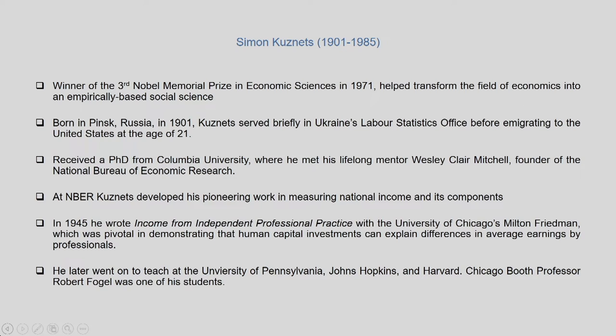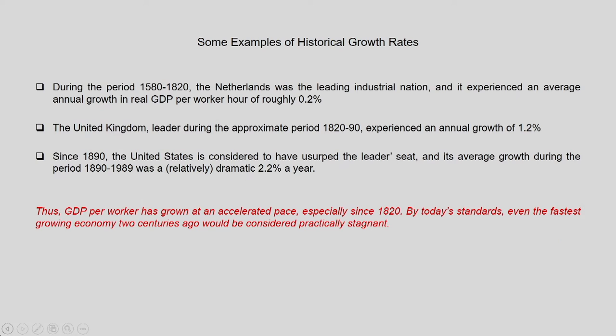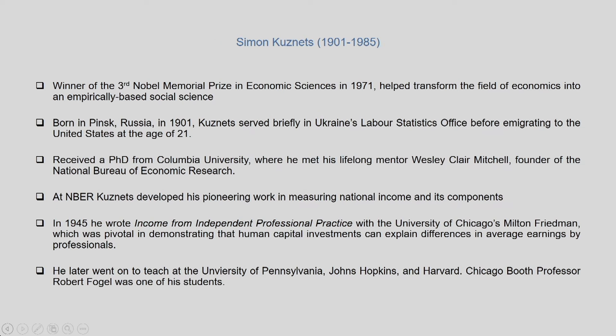Later on, Professor Kuznets went on to teach at the University of Pennsylvania, Johns Hopkins, and Harvard University. He has to his credit about 31 books and more than 200 research papers, most of which concentrated on income growth and distribution across countries. He was probably one of the first persons to come up with a formal definition of economic growth.